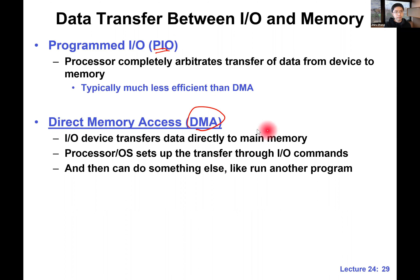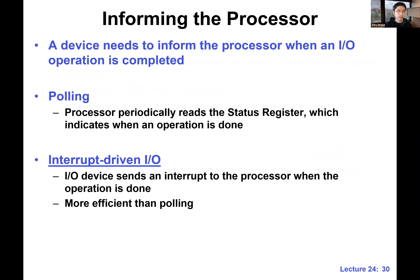For moving a large amount of data, DMA is obviously more efficient. The processor only needs to say 'send one page of data to main memory,' and DMA handles the rest. With PIO, the processor would have to load one byte or one word at a time from the I/O device and then use store instructions to write to main memory — that's much slower. I'm throwing a lot of new terms at you — I'll show a concrete example soon.